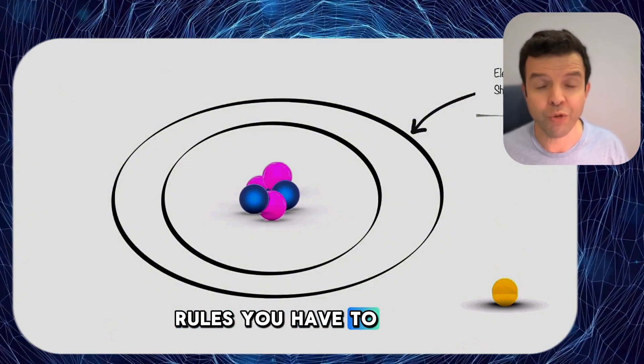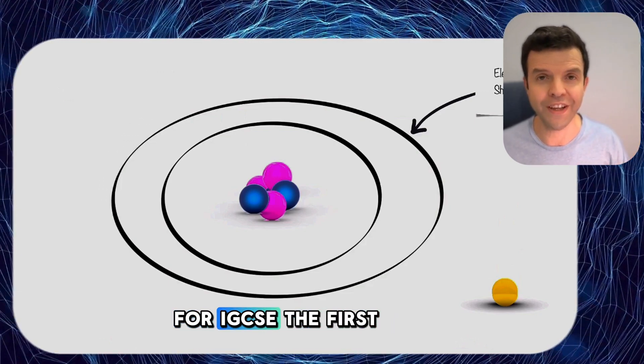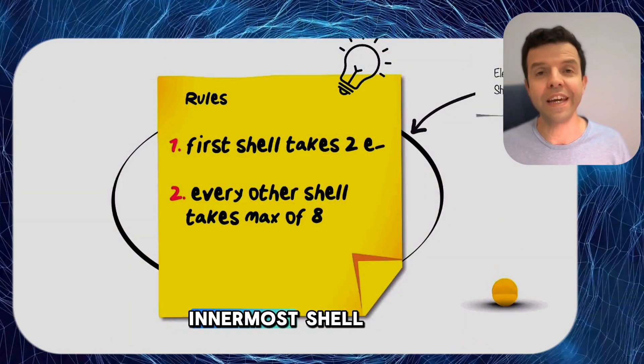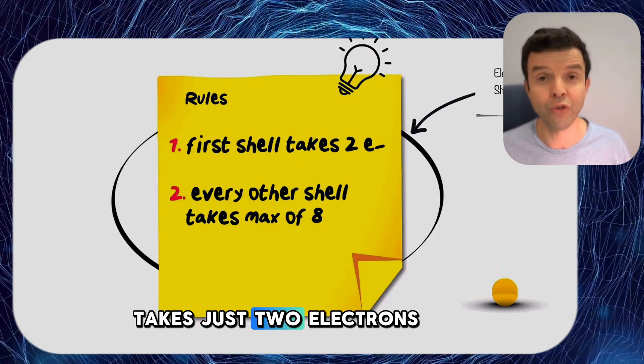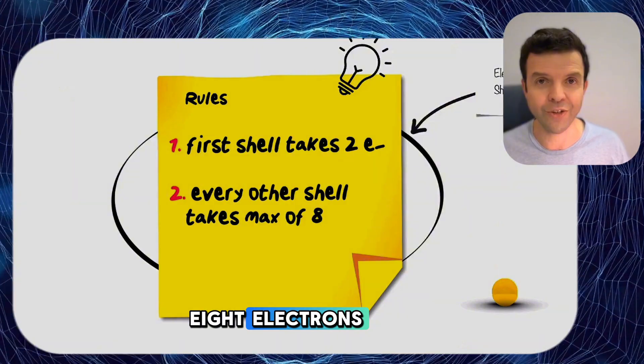There are two rules you have to keep in mind when doing the electron configuration for IGCSE. The first rule says that the innermost shell takes just two electrons and every other shell will take up to eight electrons.